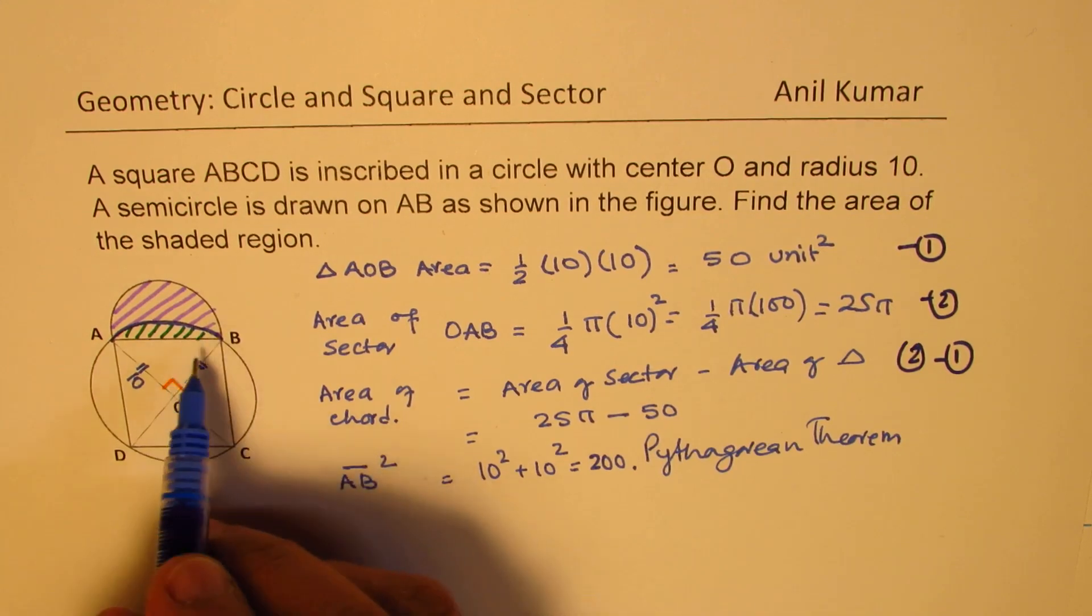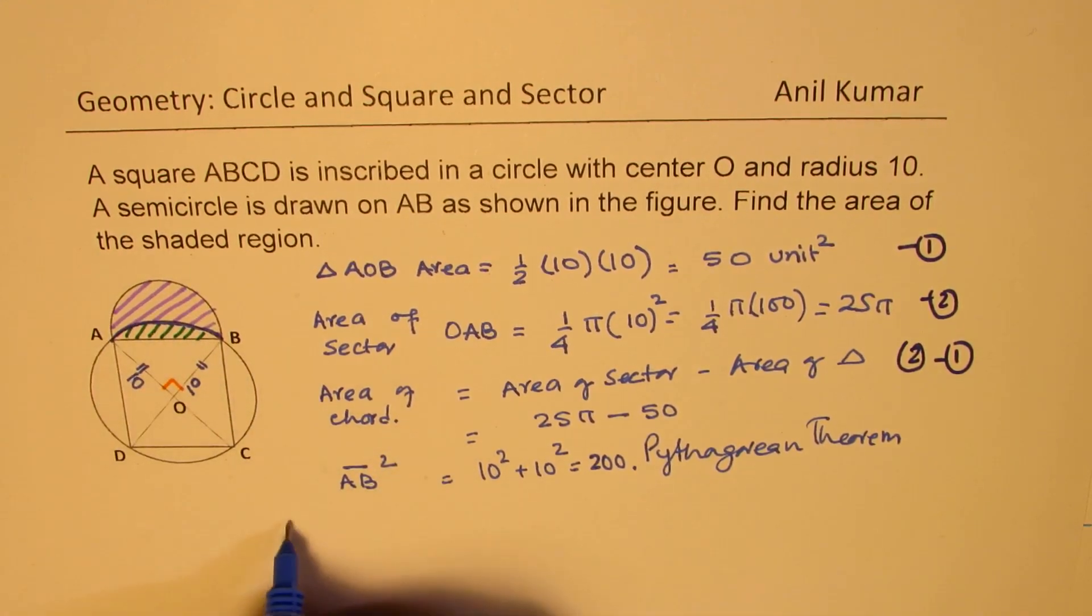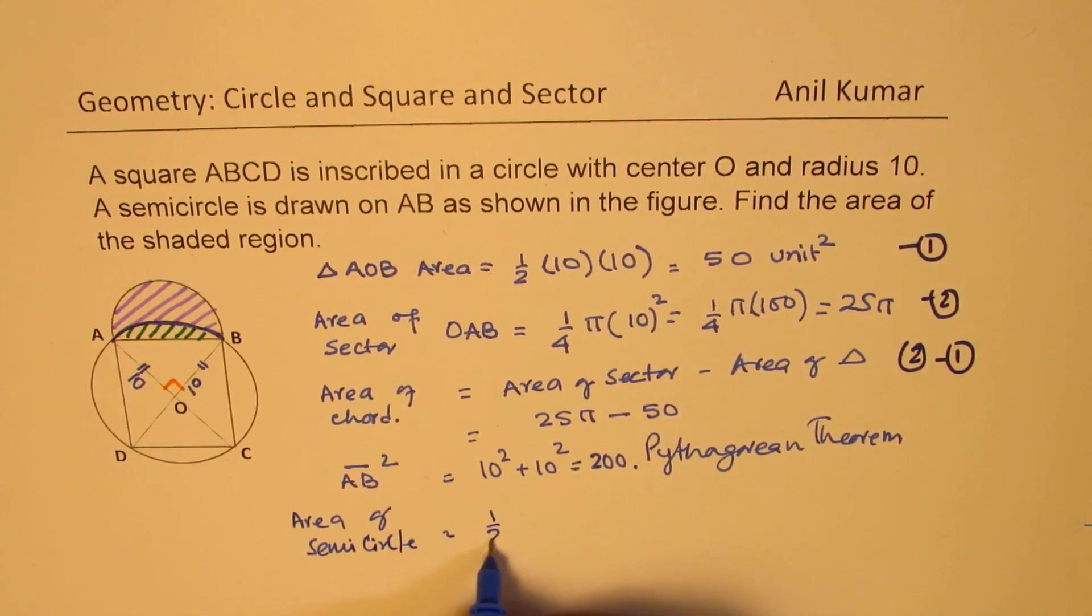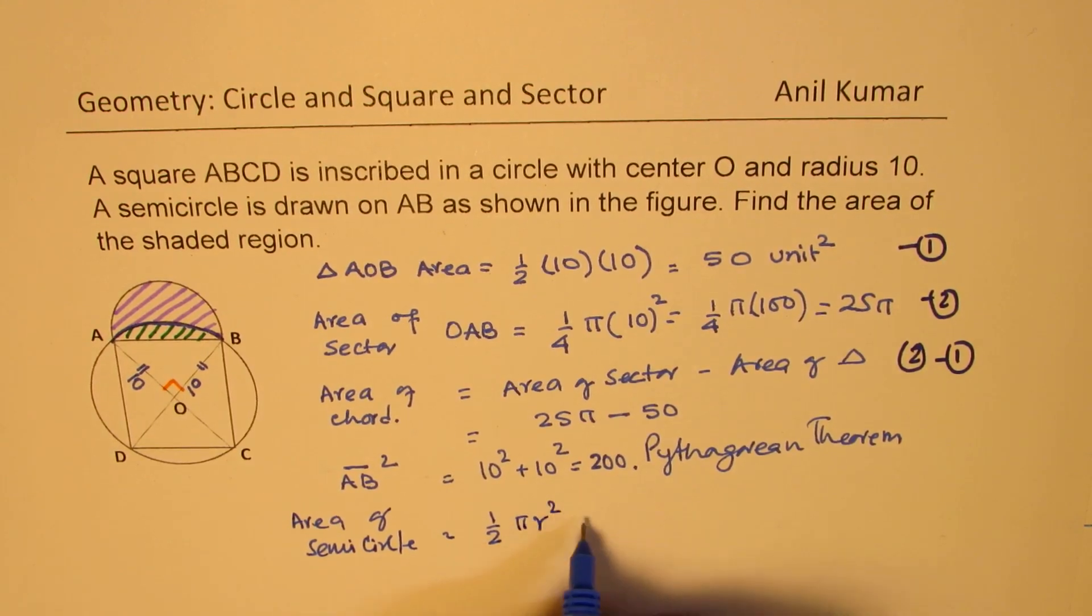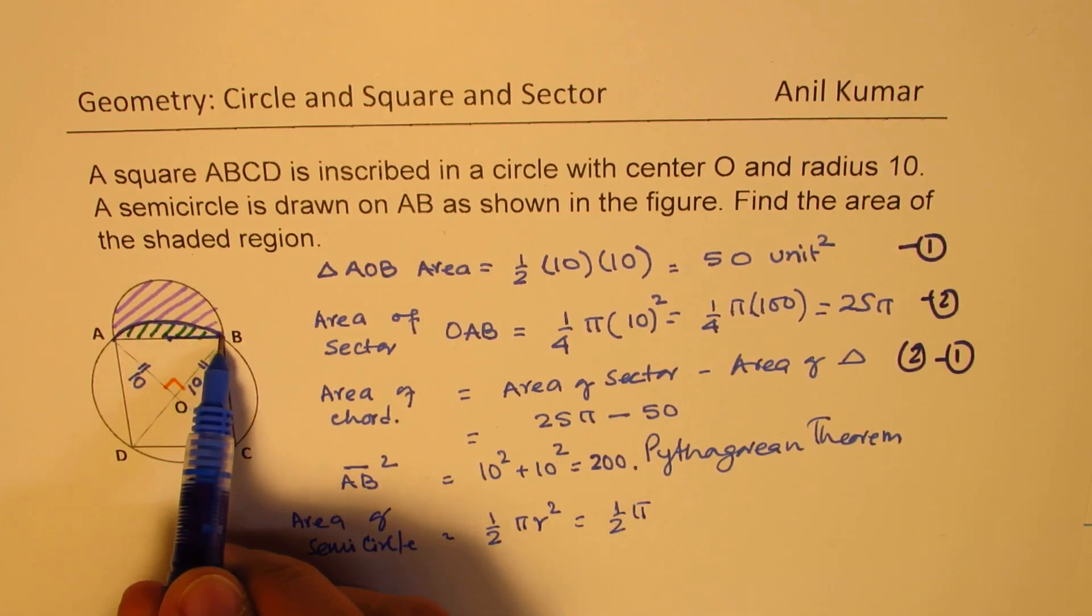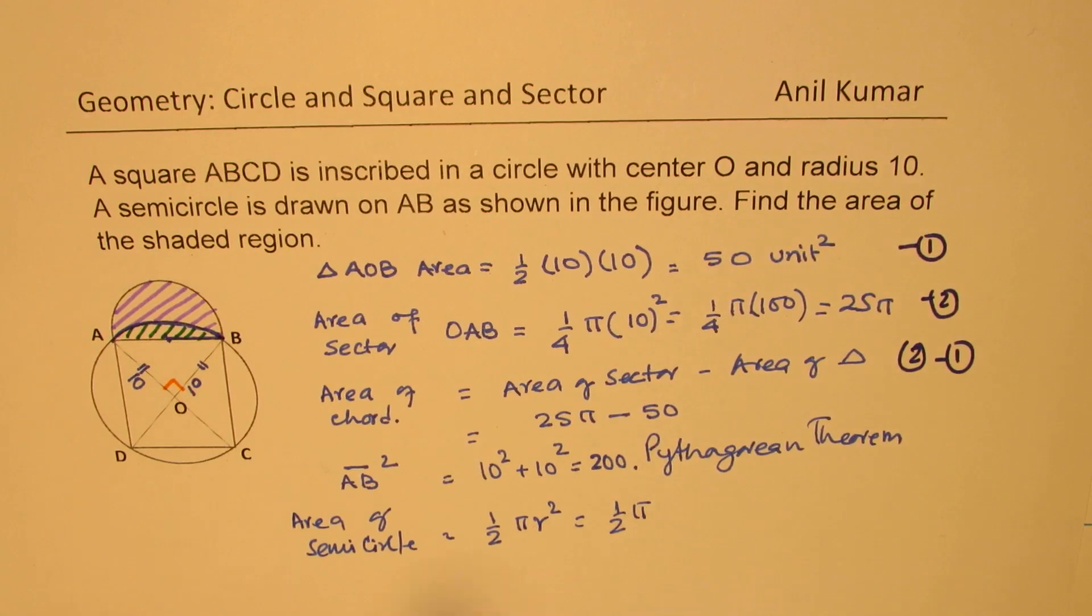Now, what is the area of the semicircle? That will be half of πr². In our case, half of π. Radius squared is half of AB. So that becomes half of AB.